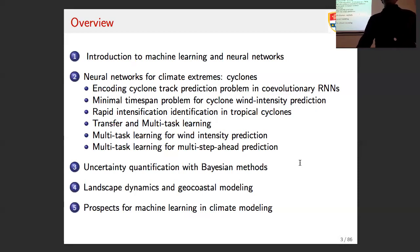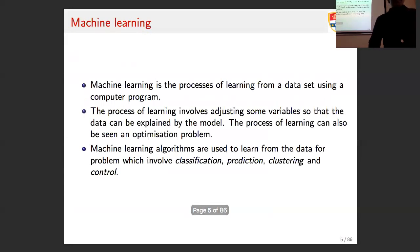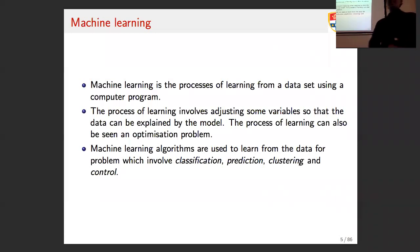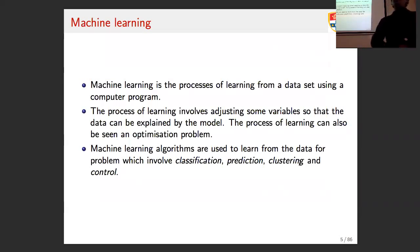Going into the introduction of machine learning methods, particularly for people who probably don't have any background in this area: what is machine learning? It's a process of learning from data. You have some model that is adjusted or optimized, and essentially that is the learning process. There are a number of machine learning methods, one of them being neural networks, and others such as support vector machines and Gaussian processes. The major categories of tasks are classification, prediction, clustering, and control.